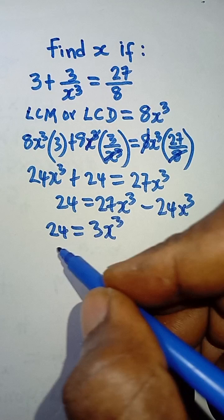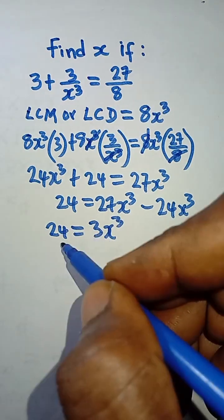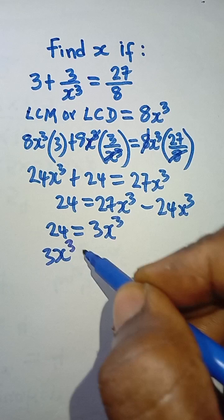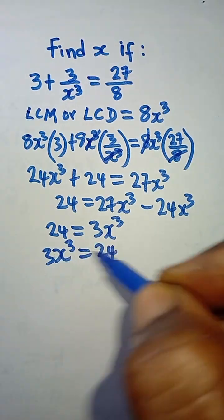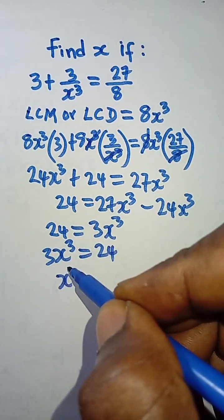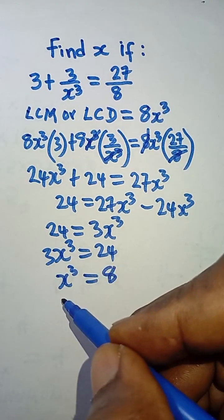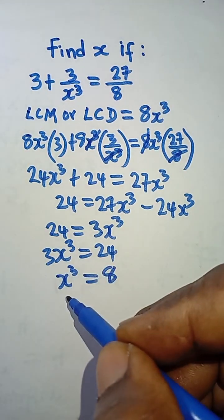You divide both sides by 3. You can write this as 3x cubed is equal to 24. When you divide both sides by 3, you are left with x cubed is equal to 8. And so you take the cube root of both sides.